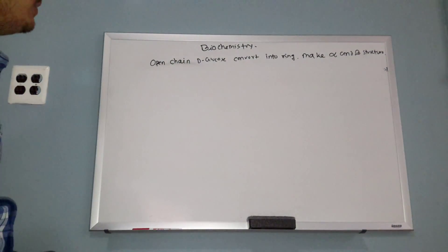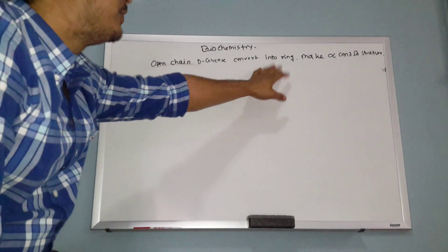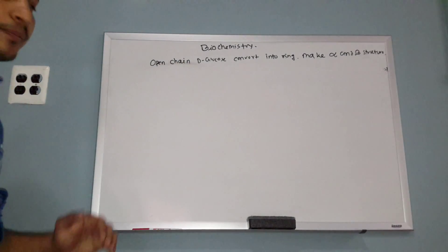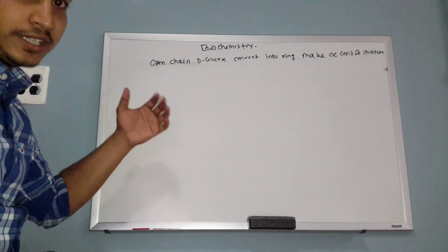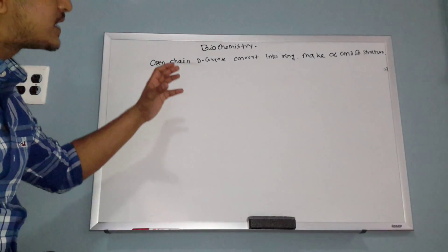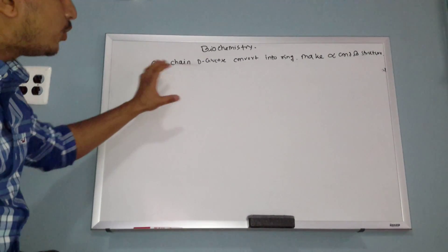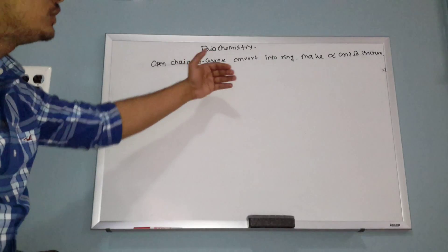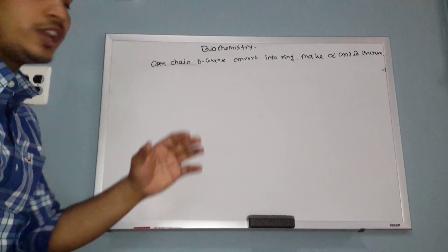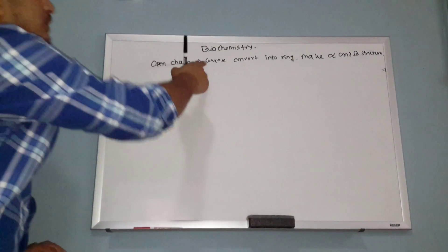So why do we need a ring form instead of open chain form? The reason is because inside the cell, glucose cannot be in open chain form — it's in ring form. That's why we need to understand how it converts into the ring, because inside the cell there is no open chain form.